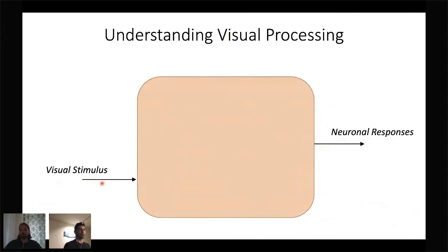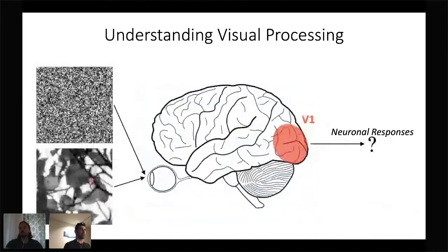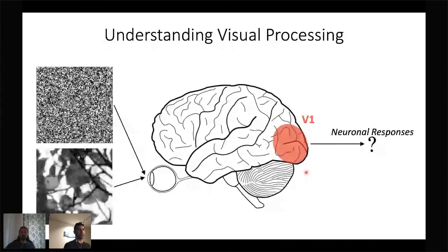This characterization of a neuron based on stimulus response gives a description known as its receptive field. The question we asked was how much this characterization depends on the type of stimulus presented. Specifically, if we present two completely different sets of stimuli — white noise and natural scenes — to neurons in primary visual cortex, what would be the difference in how these neurons respond to these two stimulus types?